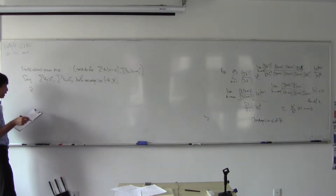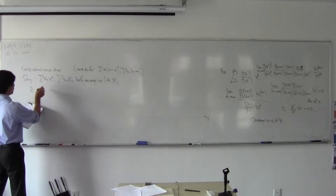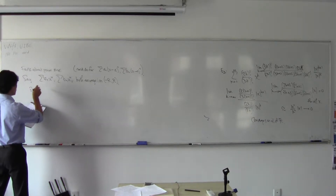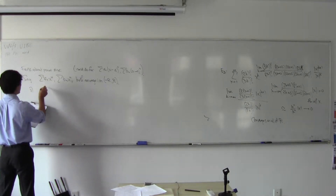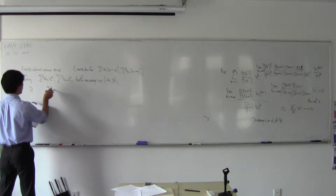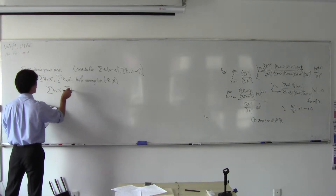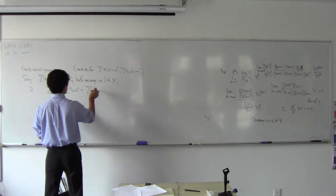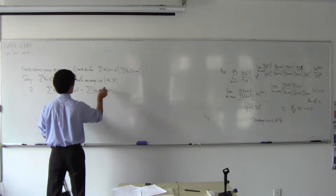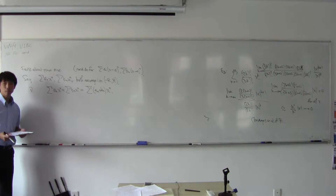Fact one — and this is no surprise — that summation a_n x to the n plus summation b_n x to the n equals summation (a_n + b_n) x to the n. Okay, that's no surprise.